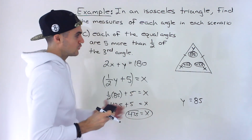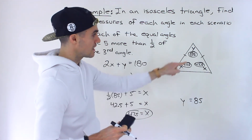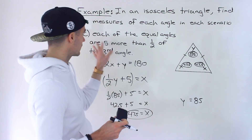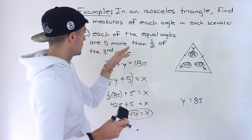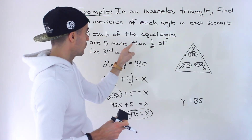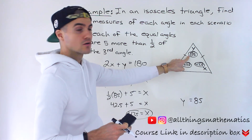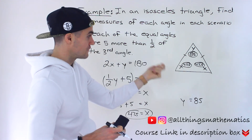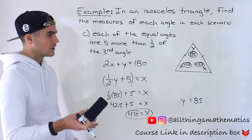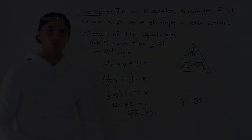To verify: 47.5 plus 47.5 is 95, plus 85 gives 180. And checking the wording — one half of 85 is 42.5, plus 5 equals 47.5. So we can be confident those angles are correct.